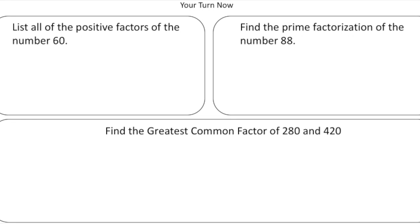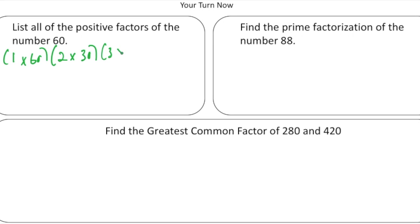Welcome back. Let's see how you did with these practice problems. The first question says list all the positive factors of the number 60. So I'll list all the factor sets. I know 1 times 60 gives us 60, so 1 and 60 are factors. 60 is even, so 2 times 30 — both 2 and 30 are factors. And 3 goes into 60 twenty times, so 3 times 20, meaning 3 and 20 are factors.